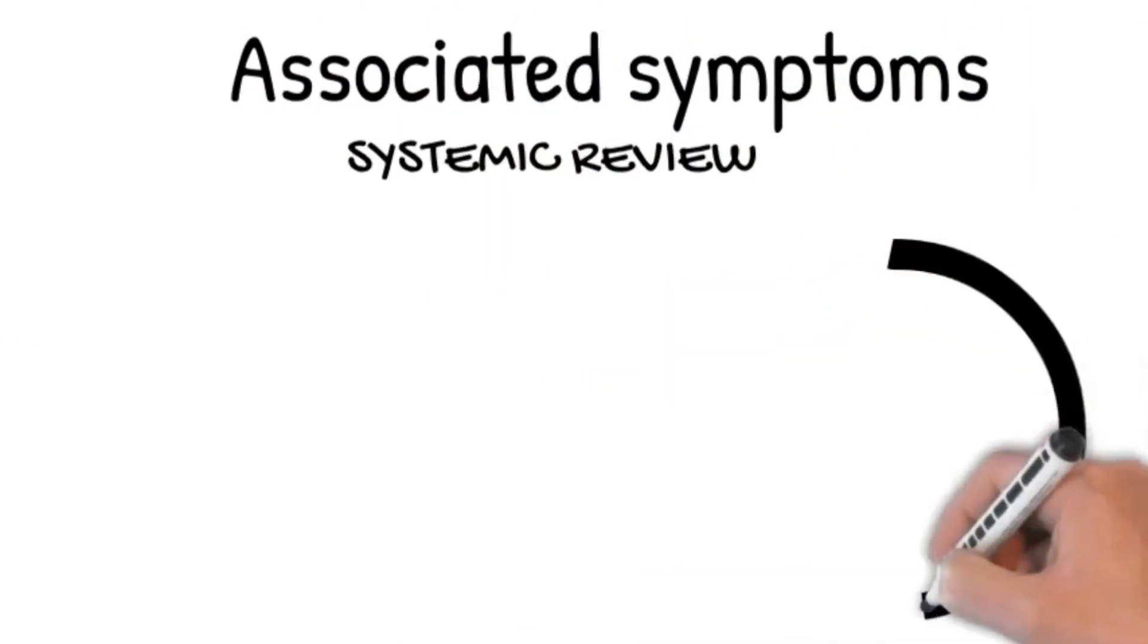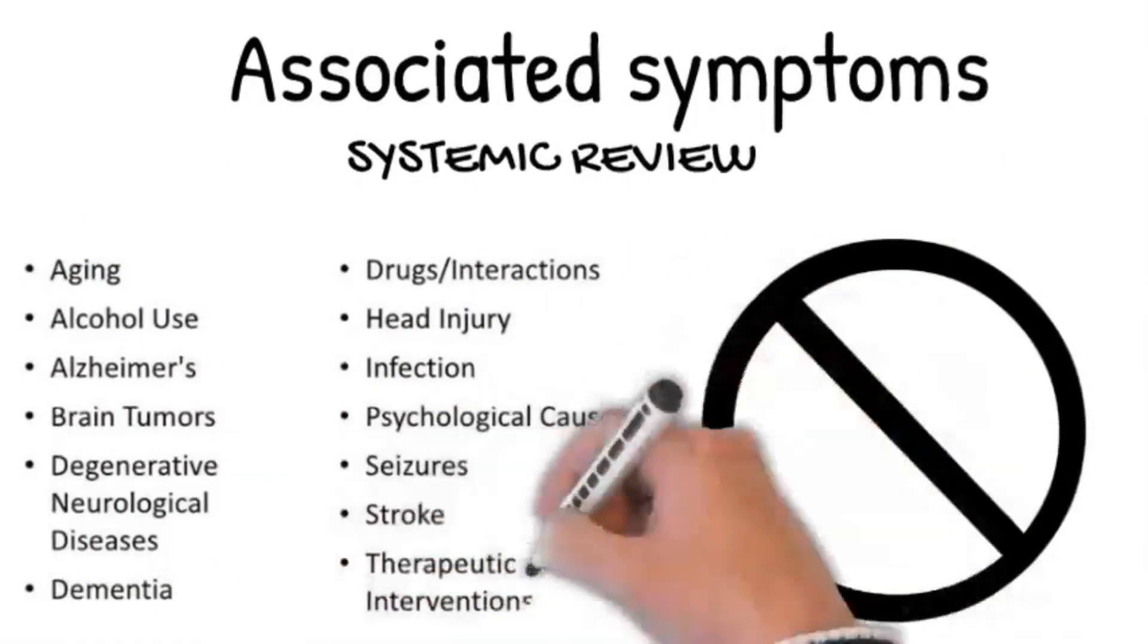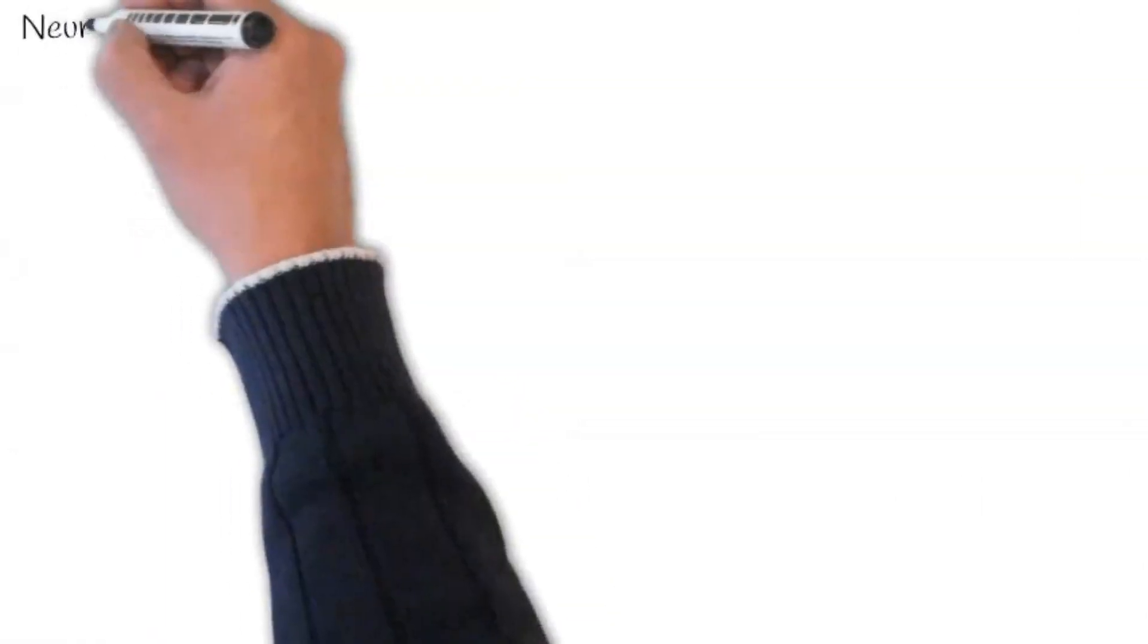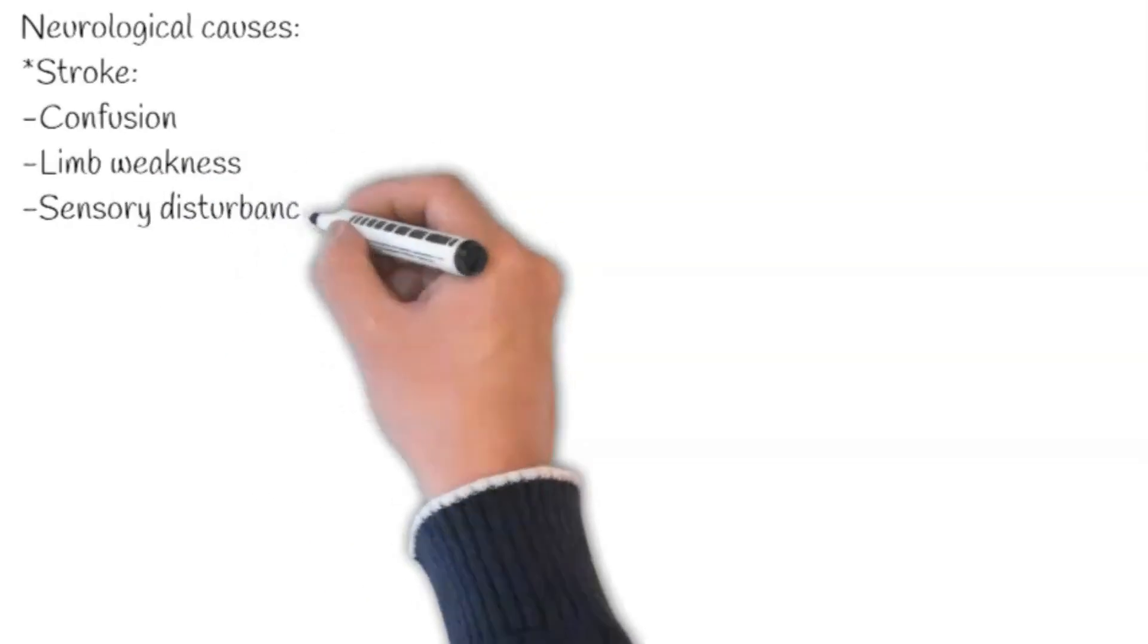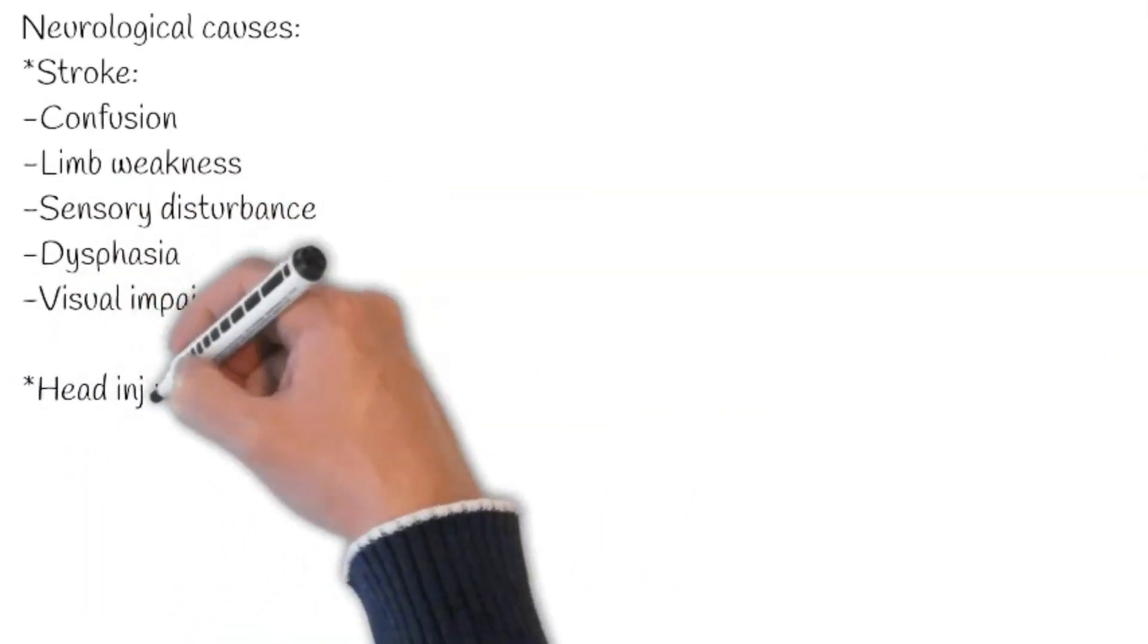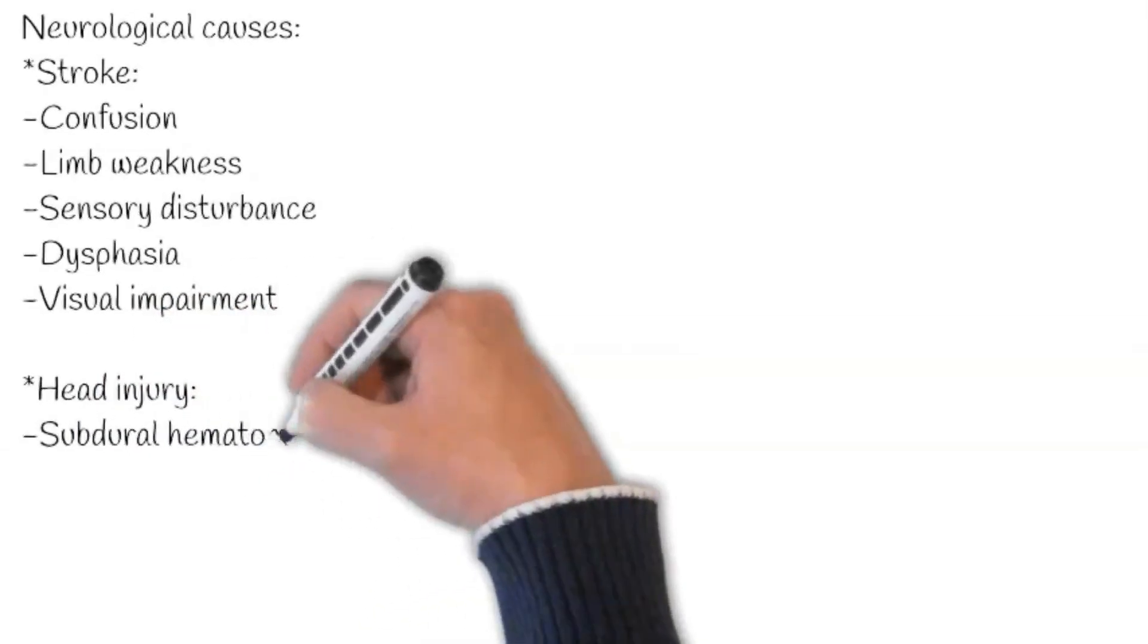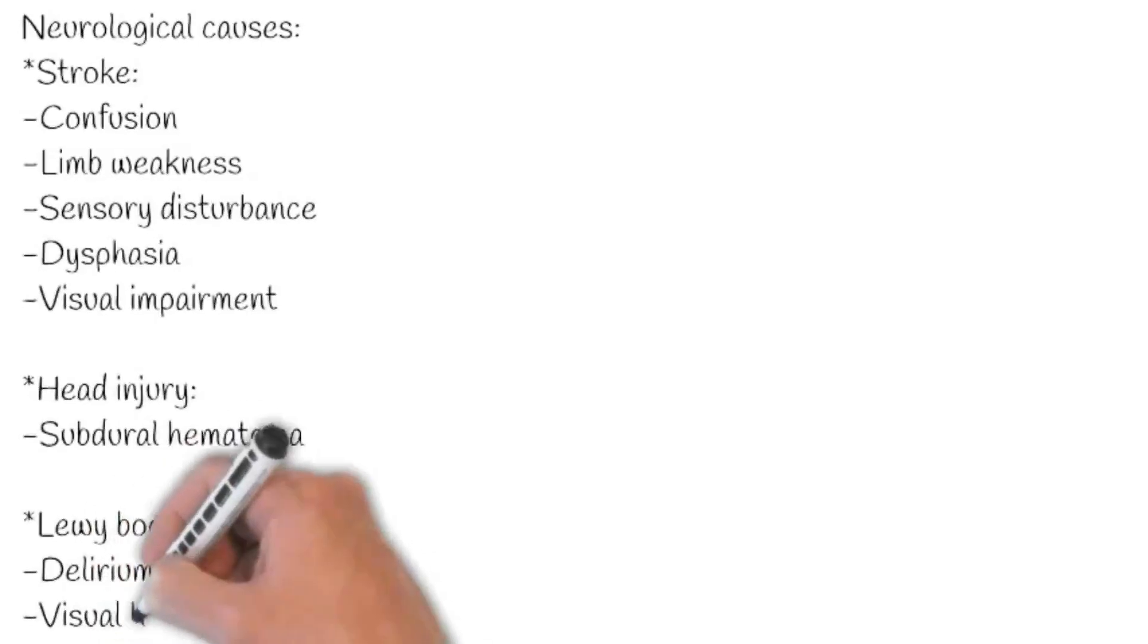Regarding neurological causes, ask about the features of stroke, as confusion can be a manifestation of stroke. However, the presence of limb weakness, sensory disturbance, dysphagia, visual impairment, vomiting, vertigo, and dysphasia will provide supportive evidence for this cause.